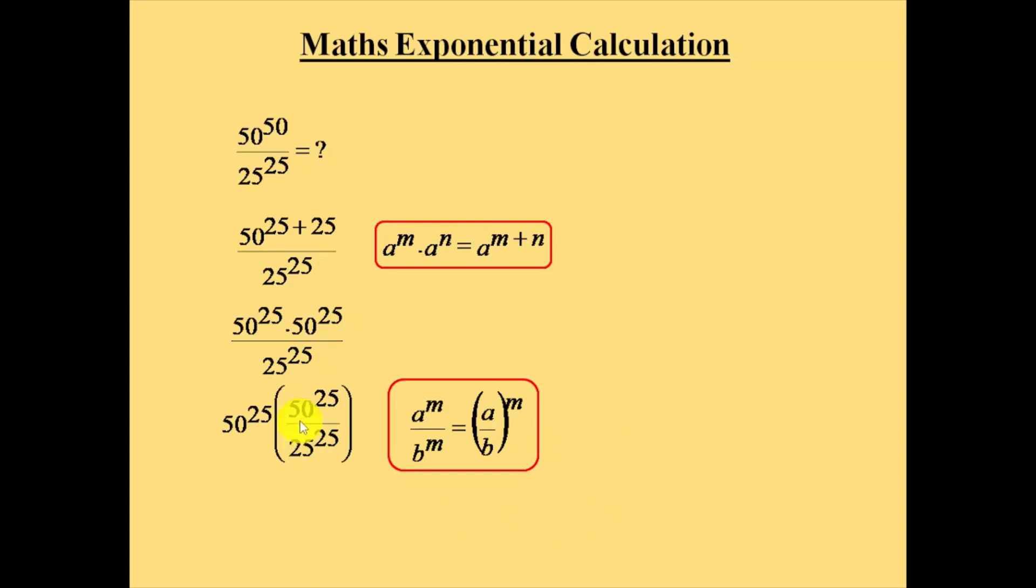Here, consider a as 50, b as 25, m as 25. That will become a by b, 50 by 25, which is equal to 2. So 2 power 25, and 50 power 25 remains as it is. This will become 2 to the power of 25.